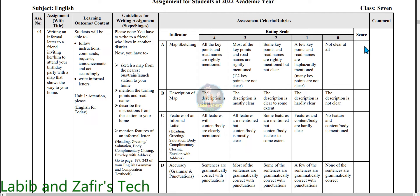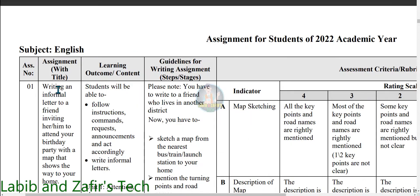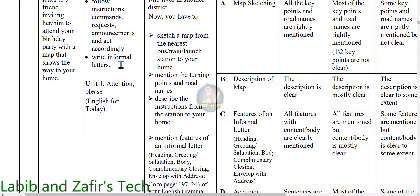This is your English assignment. Assignment number 1, assignment title: Writing an informal letter to a friend inviting her or him to attend your birthday party, with a map that shows the way to your home. The learning outcomes are: students will be able to follow instructions, commands, requests, and announcements and act accordingly, and write informal letters. This is from Unit 1: Attention Please, English for Today.